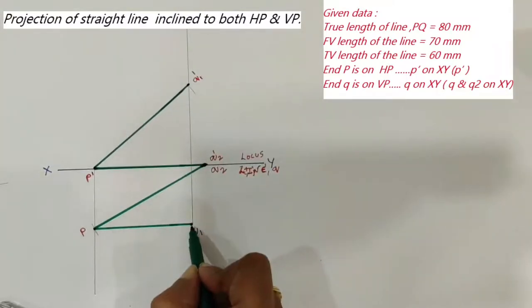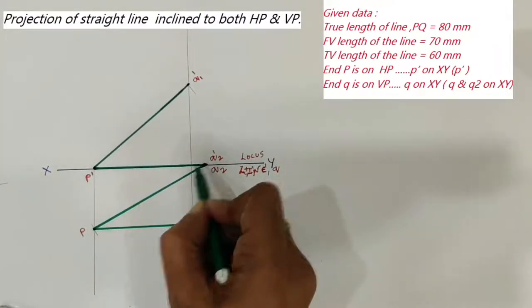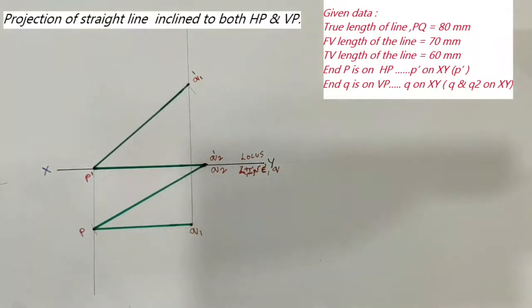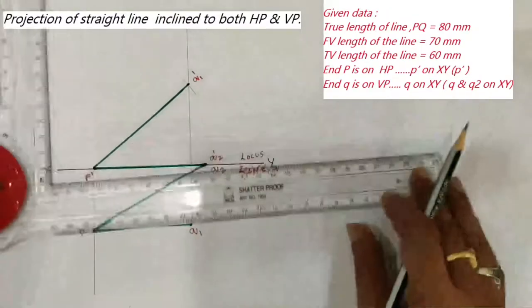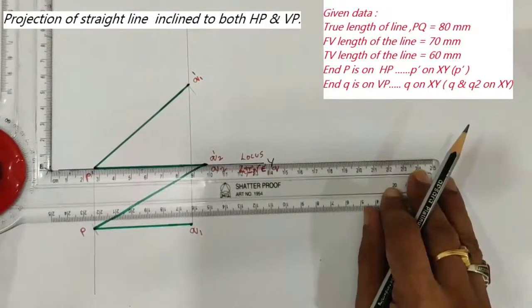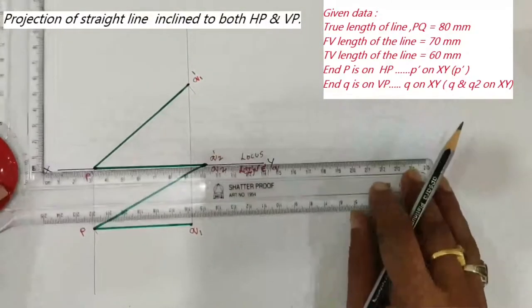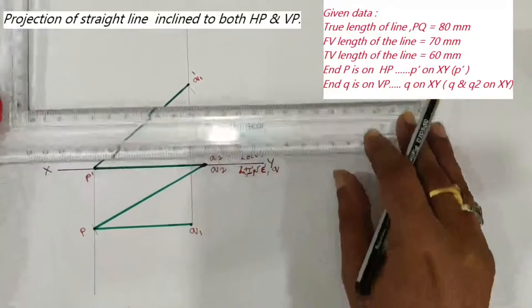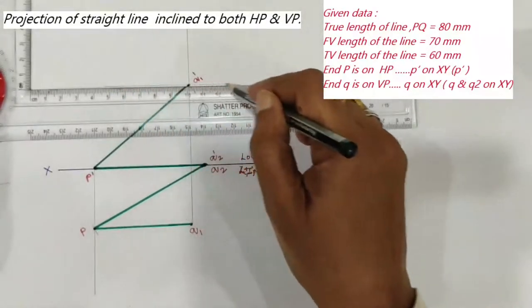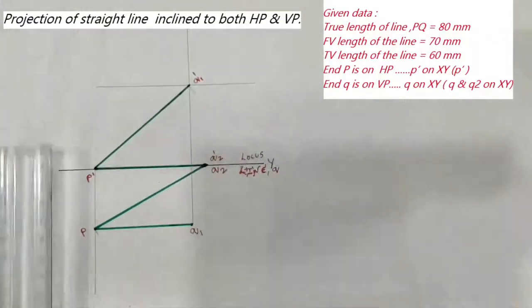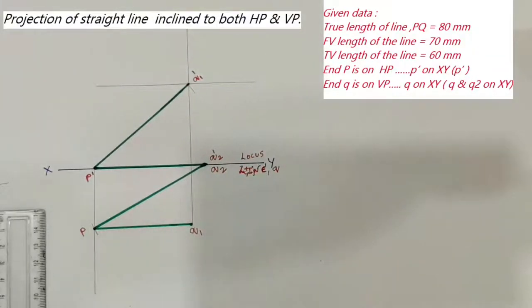This is the apparent length. For this apparent length, this is the true length. After that, draw a locus line through Q1' which is parallel to the XY line. Name this the locus line Q'.